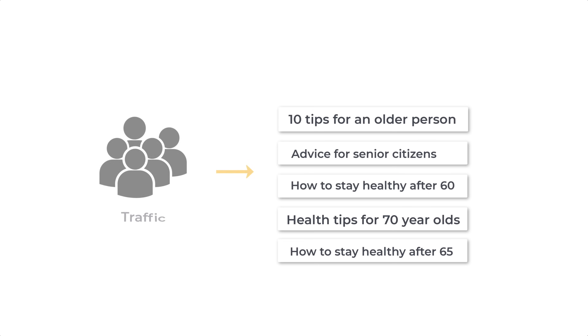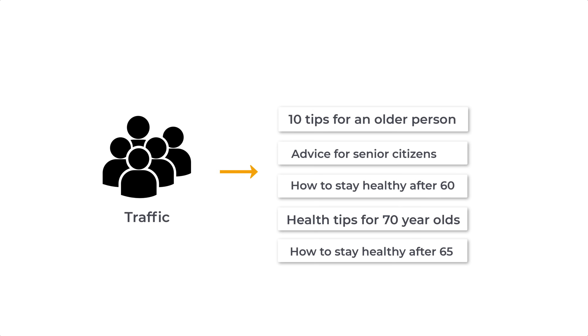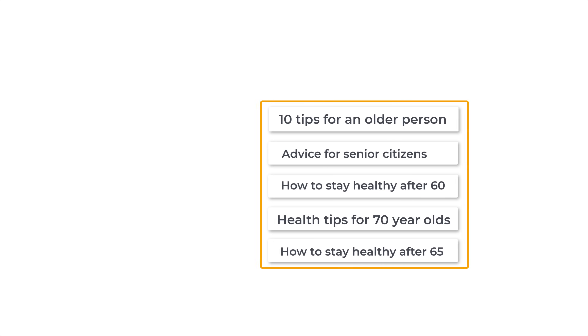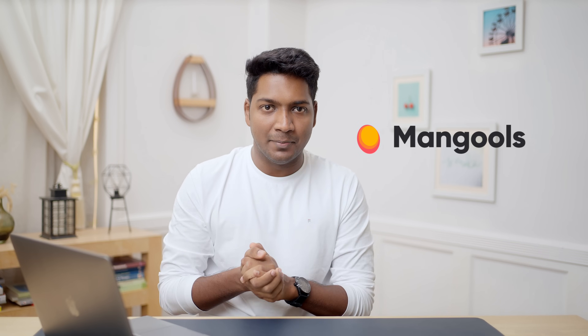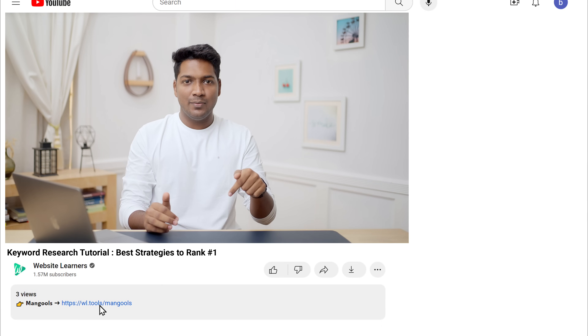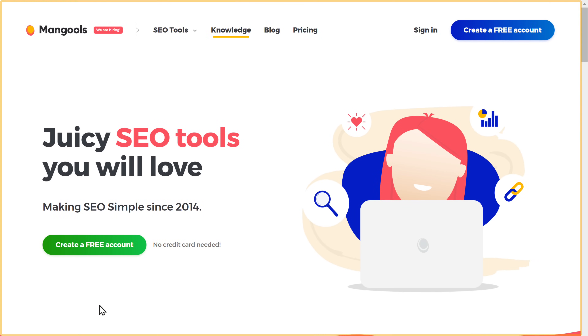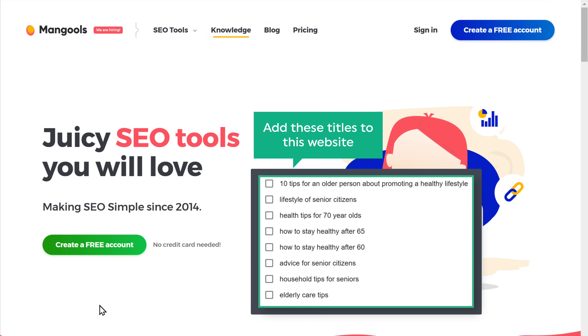Alright, now we have enough ideas for a title. Next, we just need to select one. Now this is a very important process — we need to make sure that enough people are searching for the title so that it can get traffic. And we also have to check which title has low competition so that it is easier to rank on Google. We are going to use a tool called Mangool's Keyword Finder. This tool will analyze your titles or keywords and give you all the insights you need. Just click the link below this video and it will take you to this page.